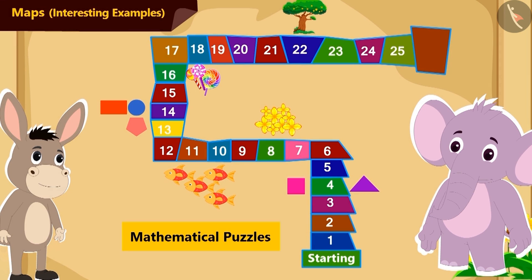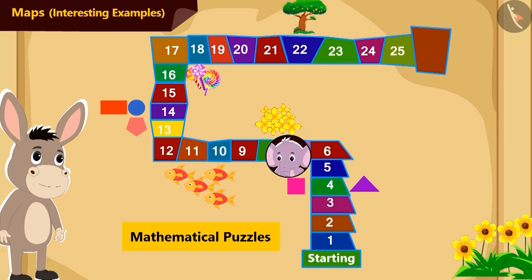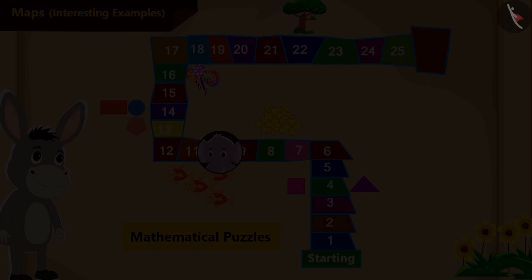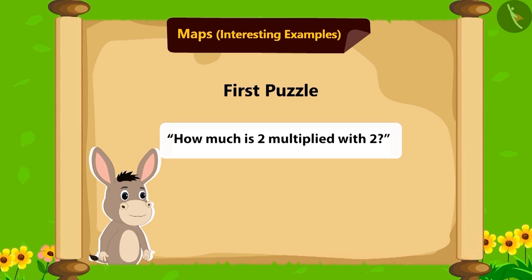Then Appu has to walk over the map and reach the tile containing the number found in the solution. Bhola's first puzzle is: What is 2 multiplied with 2? Children, do you know its answer?